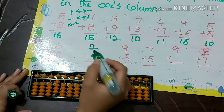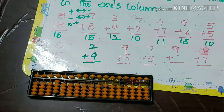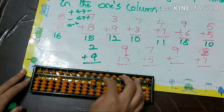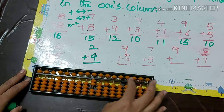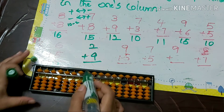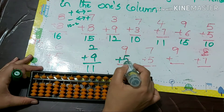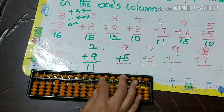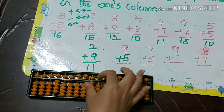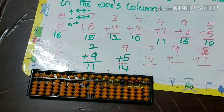Next: 2 plus 9. The formula is +10 minus 1. The answer is 11. Then 9 plus 5: using +10 minus 5, the answer is 14.